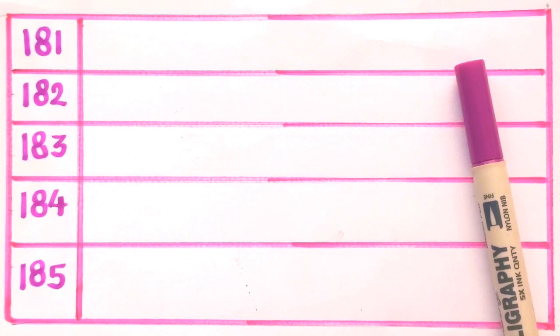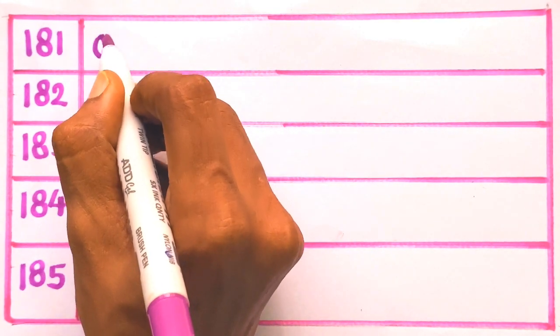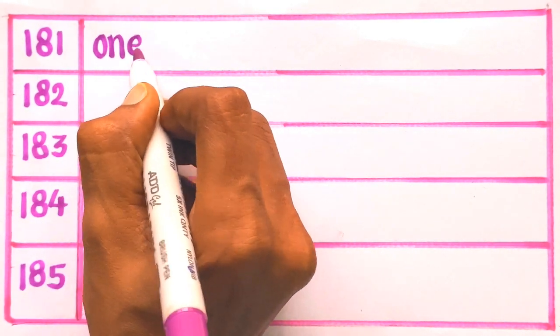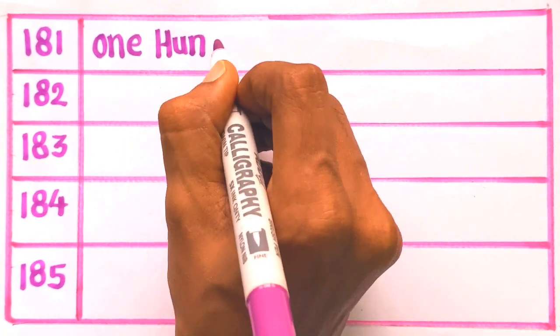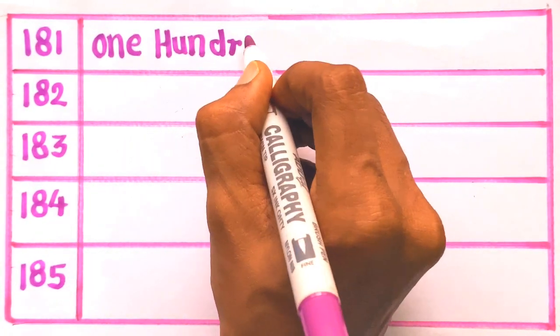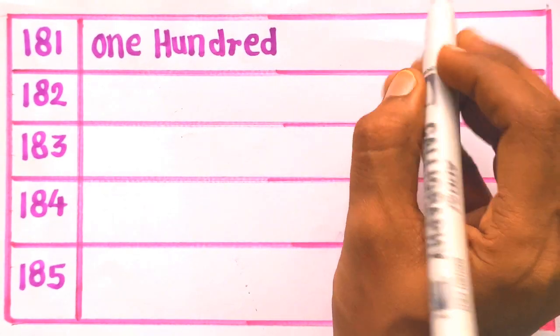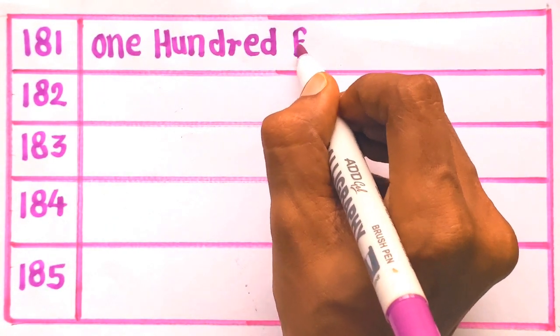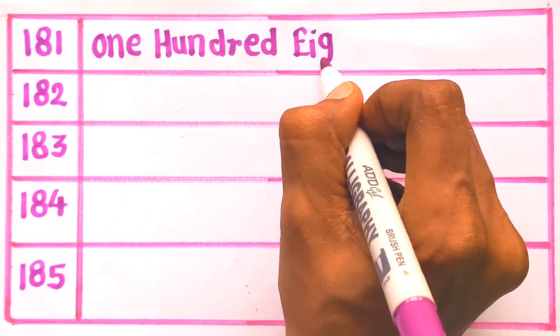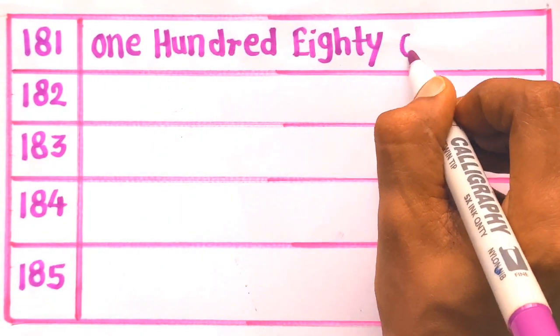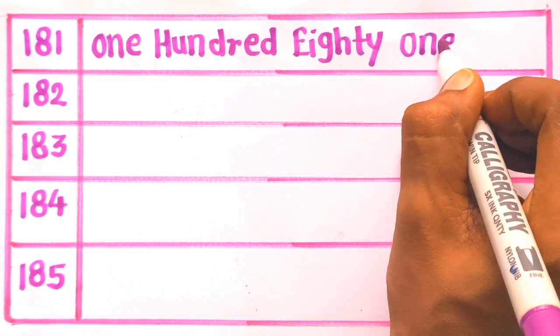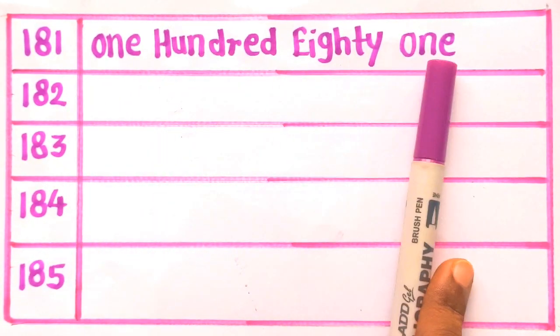So let's get started. First, 181: O, N, E — 1. H, U, N, D, R, E, D — 100. E, I, G, H, T, Y — 80. O, N, E — 1. One hundred eighty one. 181.